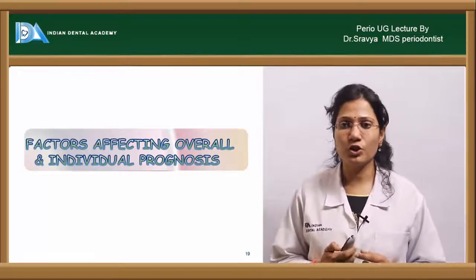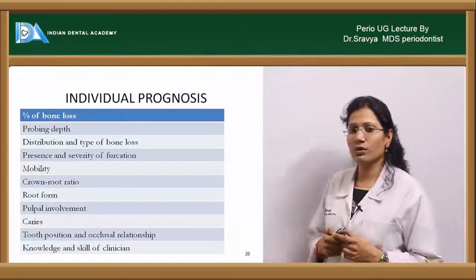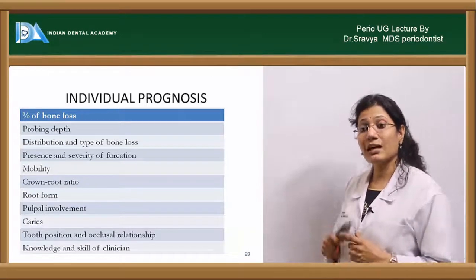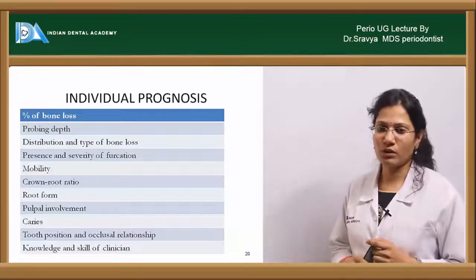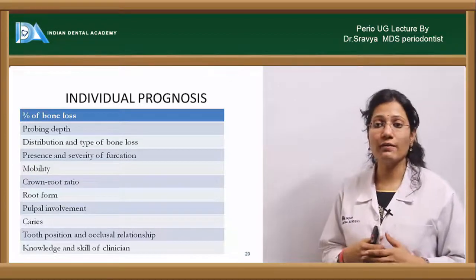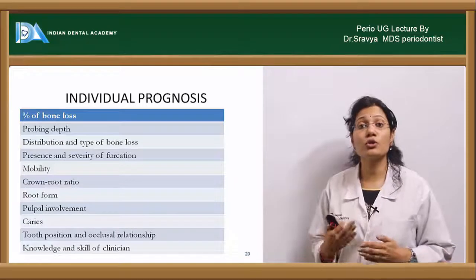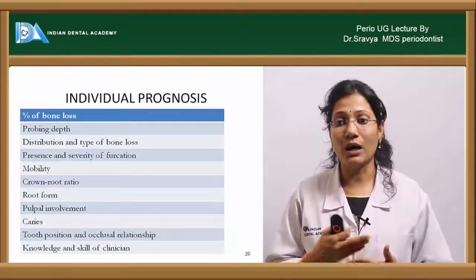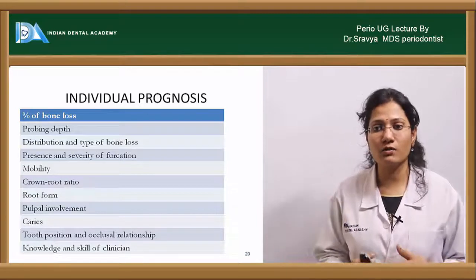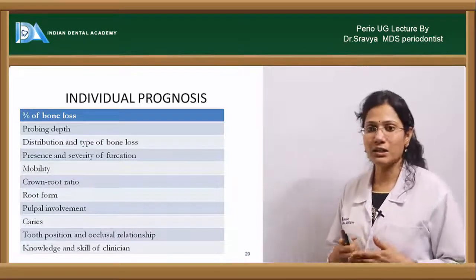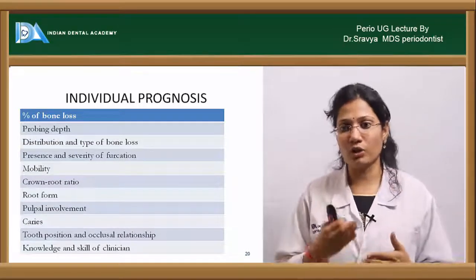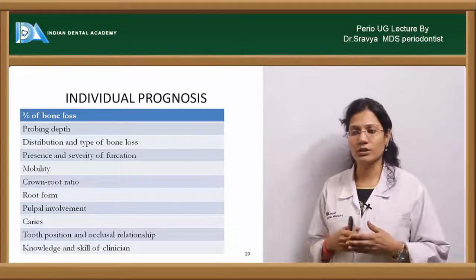What are the factors that affect individual prognosis? The factors that determine individual prognosis are the percentage of bone loss — whether it is mild, moderate, or advanced. Then probing depth — whether you have shallow or deep pockets — and the distribution and type of bone loss, whether you have angular bone loss or horizontal pattern of bone loss. If you have a vertical or angular bone loss, whether it is a one-walled, two-walled, or three-walled defect. Also, whether you have a suprabony pocket or infrabony pocket, a simple pocket, combined pocket, or complex pocket — all these determine your prognosis.